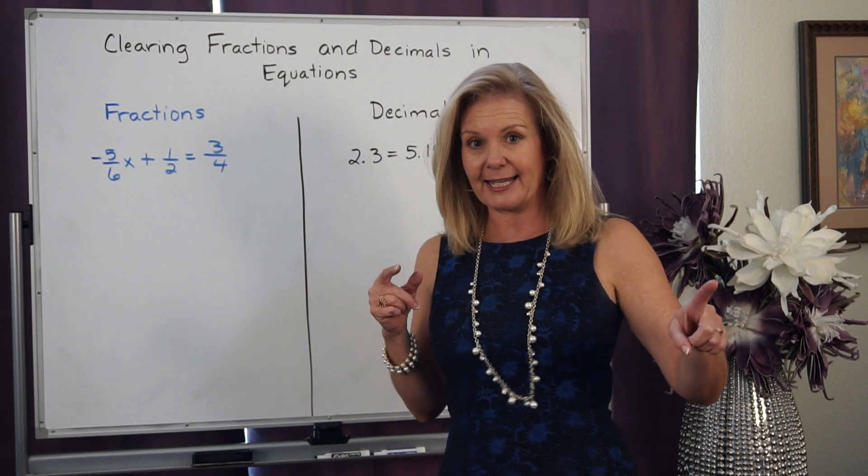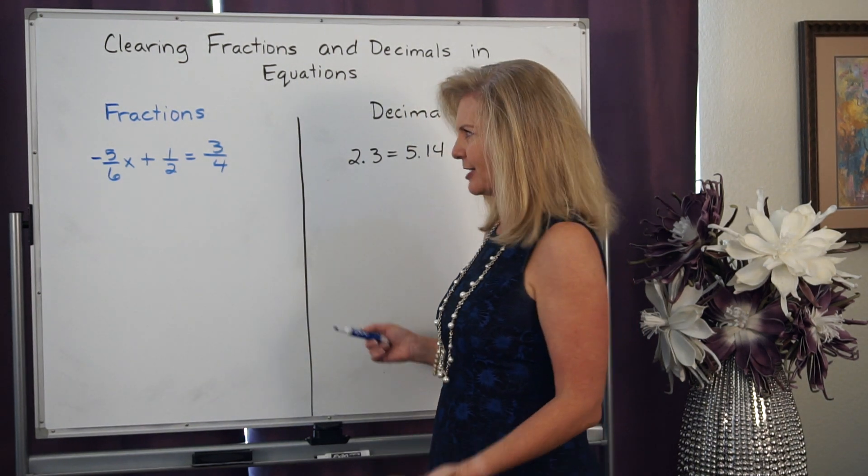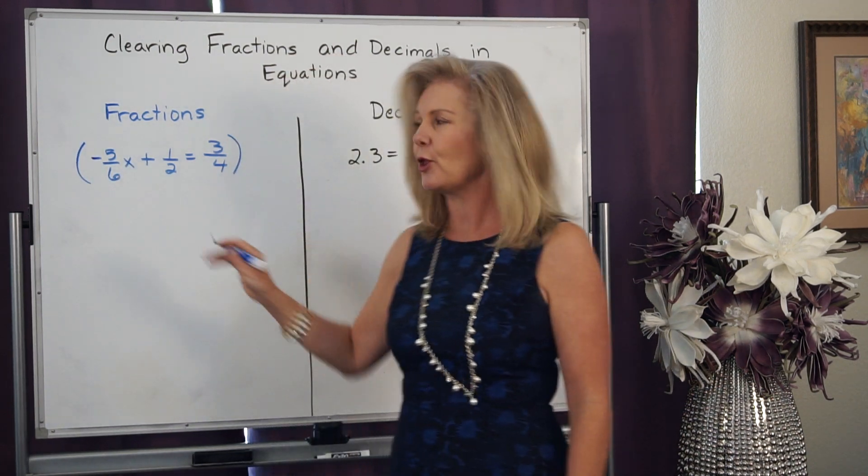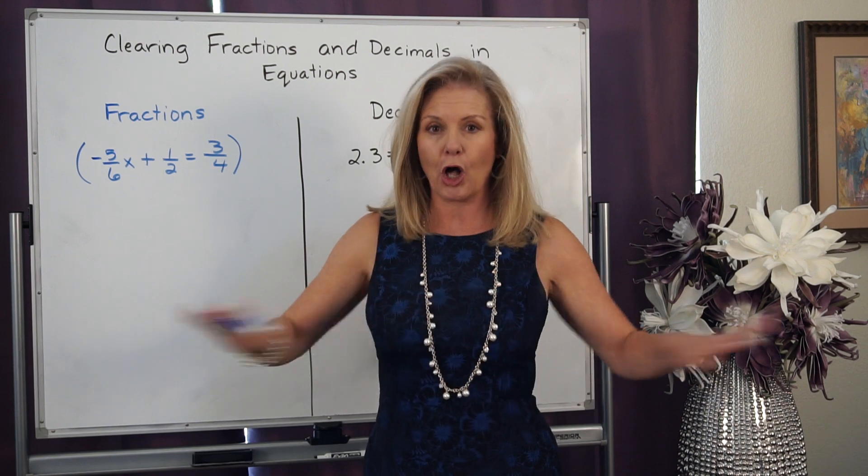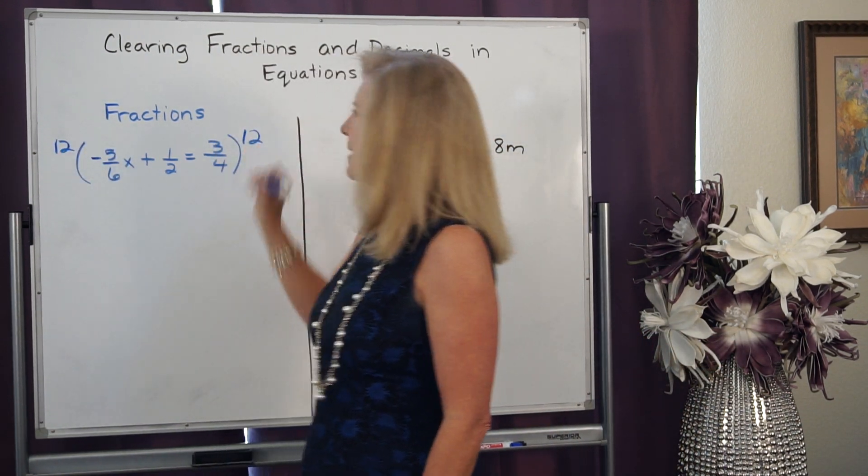So the key to this, look at the denominators. Now, we want to clear the fraction. So what we're looking for is a least common multiple of those denominators. I know 2, 4, and 6 all go into 12. So I'm going to multiply both sides by 12.